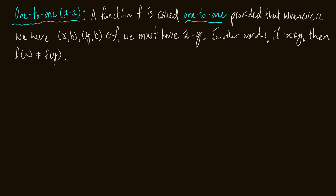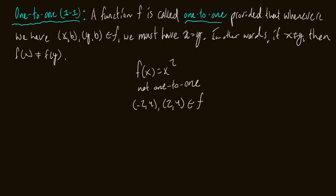One-to-one basically means each input goes to a unique output. For example, f(x) = x² is not one-to-one. In our relation f, (-2, 4) and (2, 4) are both present since (-2)² = 4 and 2² = 4, but -2 does not equal 2. We have multiple inputs being sent to the same output — we can't have that in a one-to-one function.